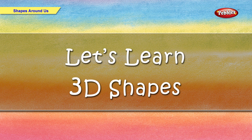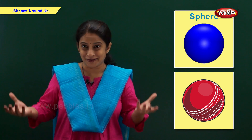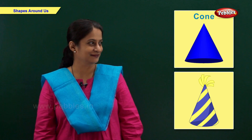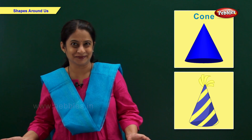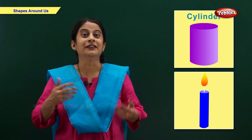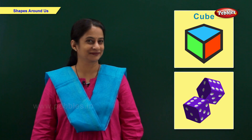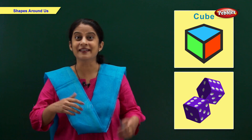Now I'm going to show you some 3D shapes. Sphere — the shape of this ball is like a sphere. Cone — the shape of this cap is like a cone. Cylinder — the shape of this candle is like a cylinder. Cube — the shape of this dice is like a cube.